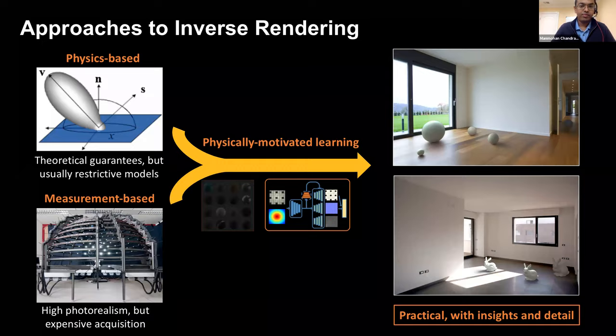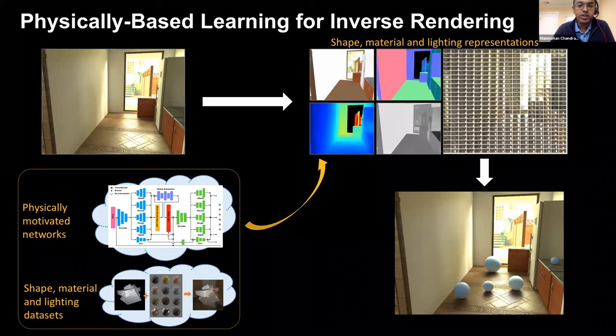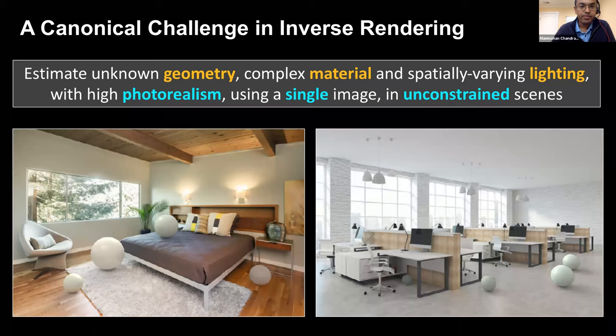The networks we design incorporate properties of material, illumination, and complex light paths. They are trained on novel photorealistic datasets designed to provide the relevant supervision, and training is kept tractable with compact yet effective representations. In summary, we develop physically motivated networks to estimate unknown geometry, complex spatially varying material, and spatially varying lighting with high photorealism in unconstrained scenes using a single or a few images.